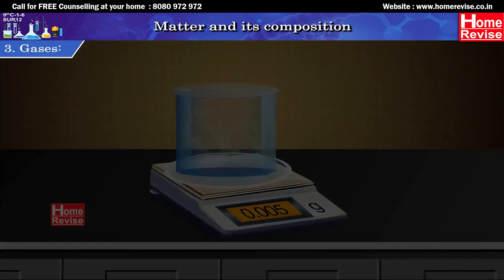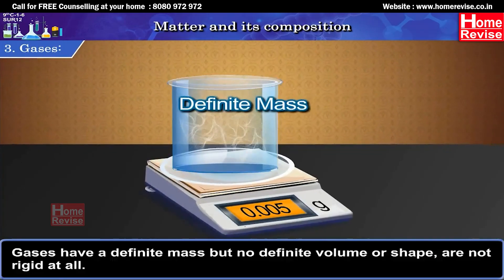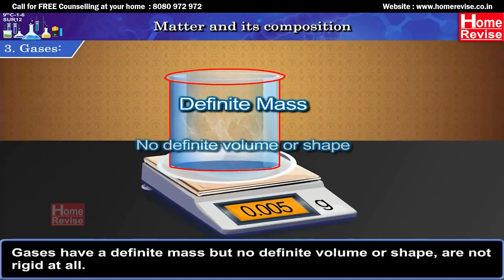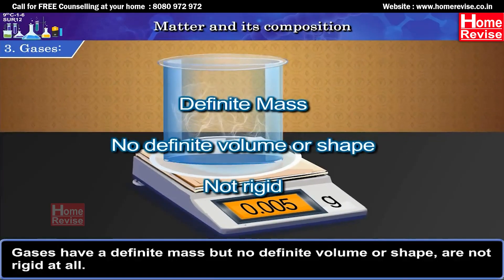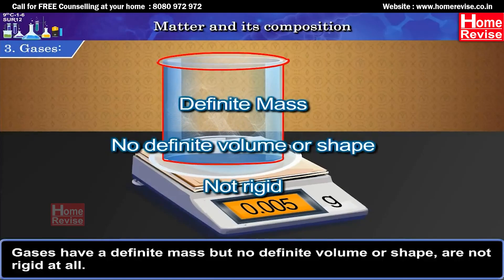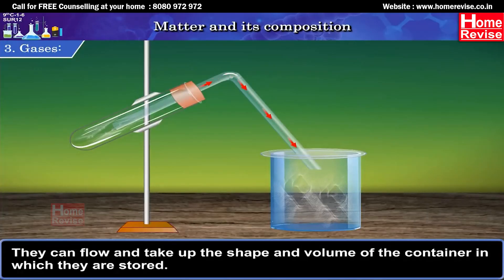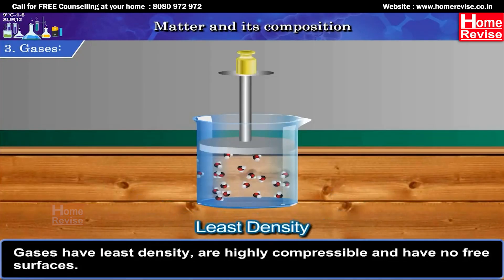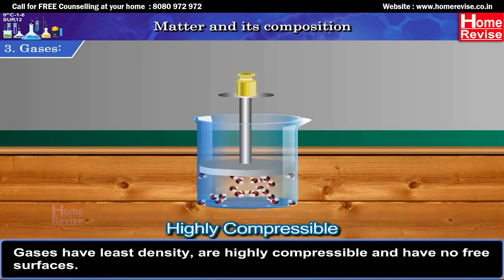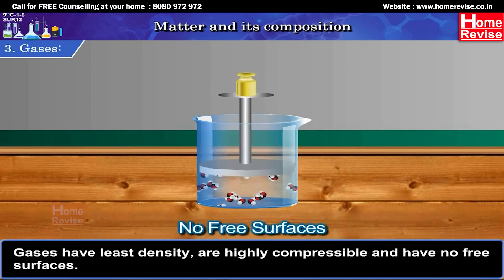Third, gases. Gases have a definite mass but no definite volume or shape and are not rigid at all. They can flow and take up the shape and volume of the container in which they are stored. Gases have least density, are highly compressible and have no free surfaces.